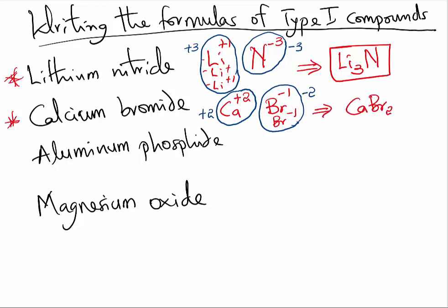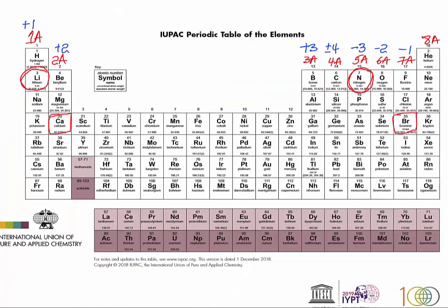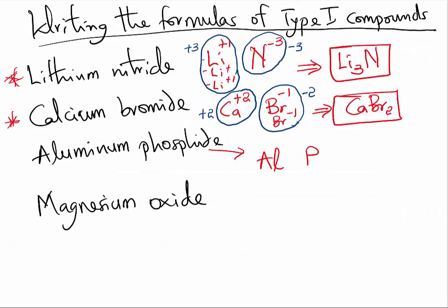And that is going to give us a compound CaBr2. That will be the formula of calcium bromide. Let us now write the formula for aluminum phosphide. Aluminum phosphide will have a formula of Al and P. Aluminum, if you look at the periodic table, would have a charge of plus 3. Phosphorus will have a charge of minus 3. Since the charge is already cancelled out, we simply write the formula of the compound as AlP.